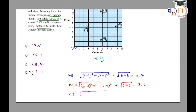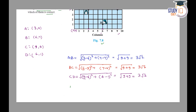Now for CD: CD = √[(9−6)² + (4−1)²] = √[9 + 9] = 3√2. And for AD: AD = √[(3−6)² + (4−1)²] = √[9 + 9] = 3√2. So all 4 distances are equal.